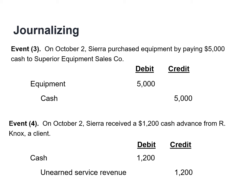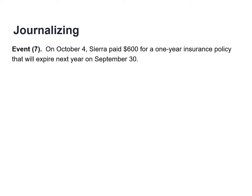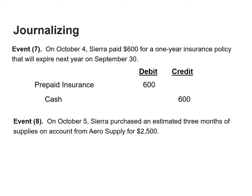When Sierra provides the service or the guided tour, at that point they can record the revenue. Sierra paid $600 for a one-year insurance policy that will expire next year on September 30th. As a result, we debited prepaid insurance, an asset account, and credited cash. Sierra also purchased three months of supplies on account. This transaction increases both an asset, supplies, because they are available for future use, as well as accounts payable, which is a liability.